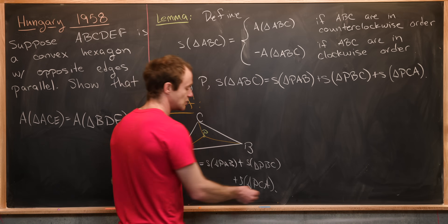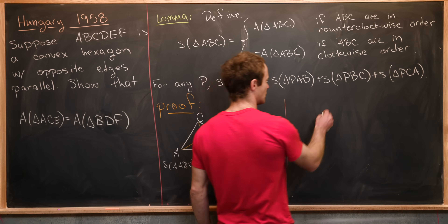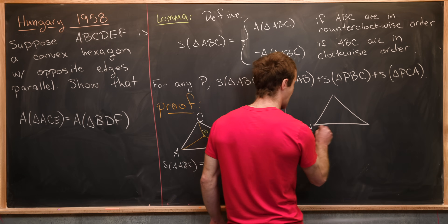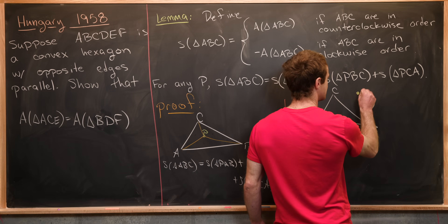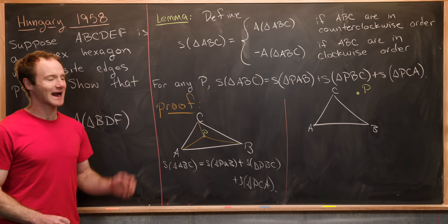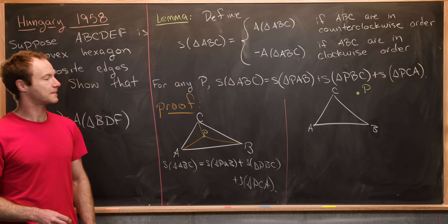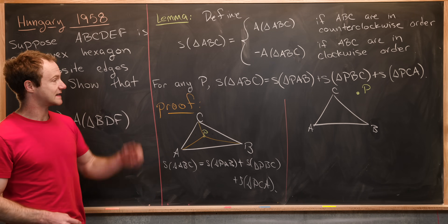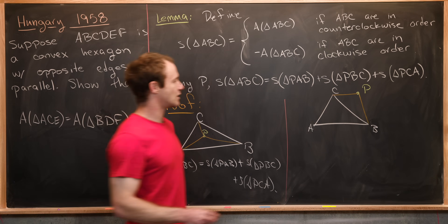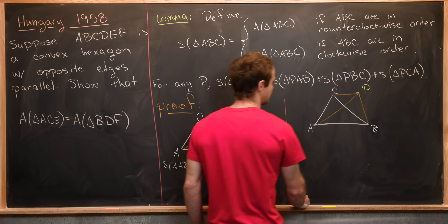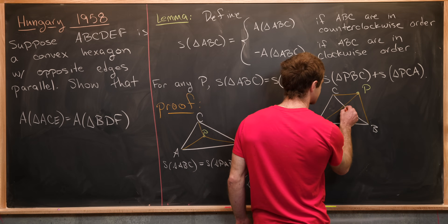Now let's look at the second case: P is a point outside of the triangle. We get our triangle ABC and put point P outside. The picture becomes a little different depending on exactly where P is placed outside the triangle. We create all the necessary triangles — triangle PBC and triangle PCA — and name the intersection point O.